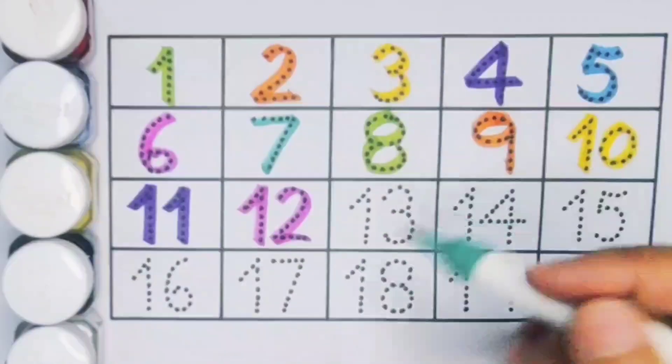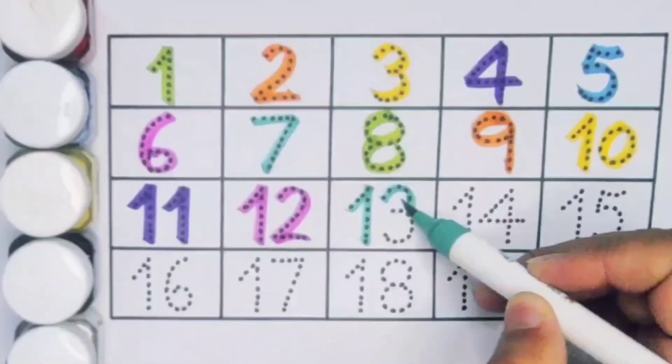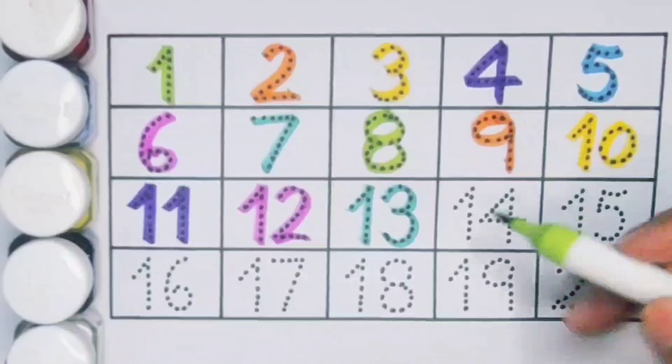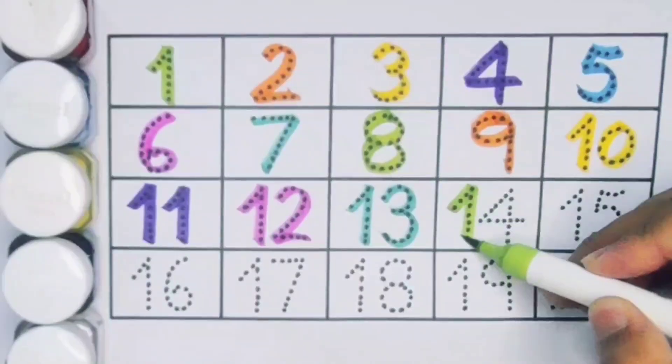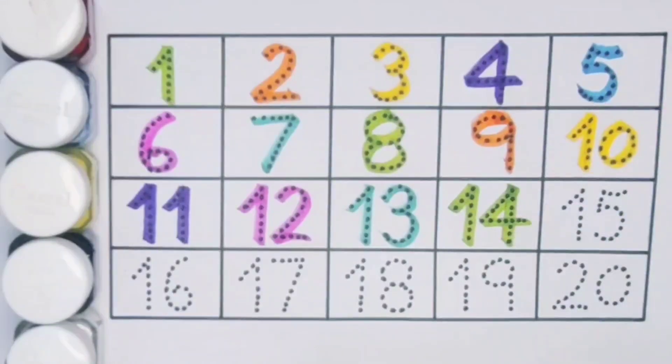Next case thirteen, one three, thirteen, number thirteen. Next case fourteen, one four, fourteen, number fourteen. Next case fifteen, one five, fifteen, number fifteen.